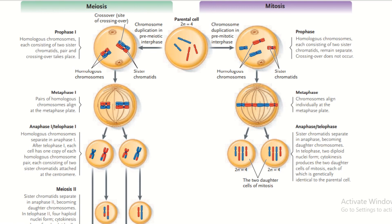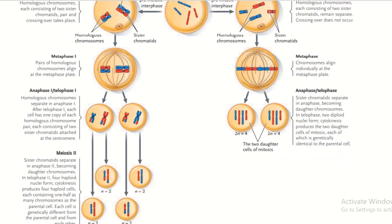In Metaphase I of meiosis, pairs of homologous chromosomes align at the metaphase plate, while in mitosis chromosomes align individually. In meiosis, homologous chromosomes separate in Anaphase I; after Telophase I, each cell has one copy of each homologous chromosome pair, each consisting of two sister chromatids attached at the centromere. In mitosis, sister chromatids separate in anaphase becoming daughter chromosomes, and in telophase two diploid nuclei form; cytokinesis produces two daughter cells genetically identical to the parent cell.